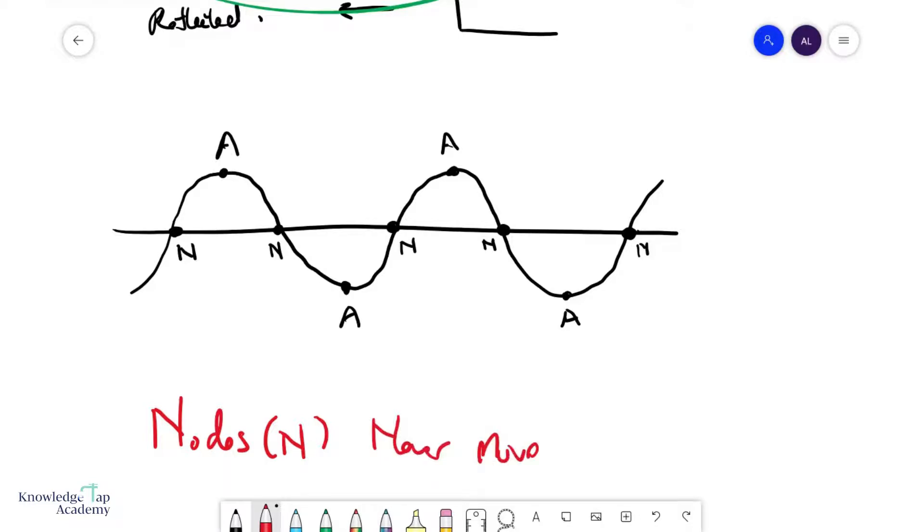And then on the flip side, there will be the antinodes, which we are going to denote as A. And these are points that will vibrate at a maximum amplitude. So this will go back and forth, back and forth like this.